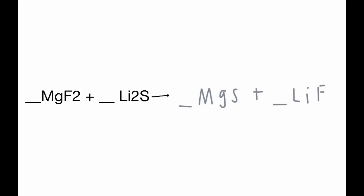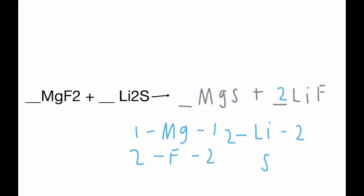Now we balance it. On the left side we have 1 Mg and on the right side 1, so those are already balanced. On the left side we have 2 fluorines, so we add a 2 in front of LiF. That also applies to the lithium, so we have 2 Li on both sides, 2 F on both sides, 1 Mg on both sides, and 1 S on both sides. We have another balanced equation. That covers how to solve double replacement problems and predict their products.